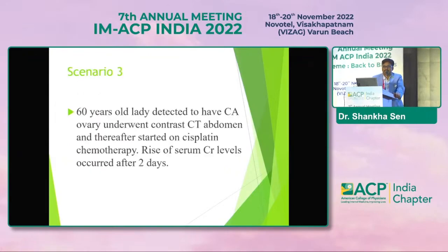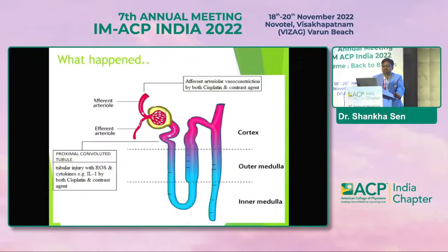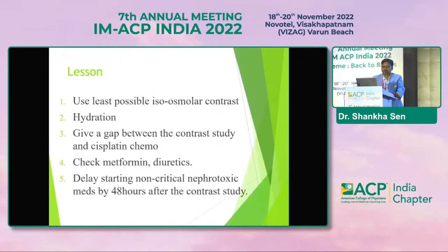In Scenario 3, a 60-year-old lady diagnosed with carcinoma ovary underwent contrast CT abdomen and was thereafter started on cisplatin chemotherapy. A rise of serum creatinine occurred after 2 days — two nephrotoxic molecules combined. We should use the least possible isosmolar contrast with adequate hydration, give a gap between the contrast study and starting cisplatin, check whether the patient is on metformin or diuretics, and try to delay starting non-critical nephrotoxic medications by 48 hours after the contrast study.